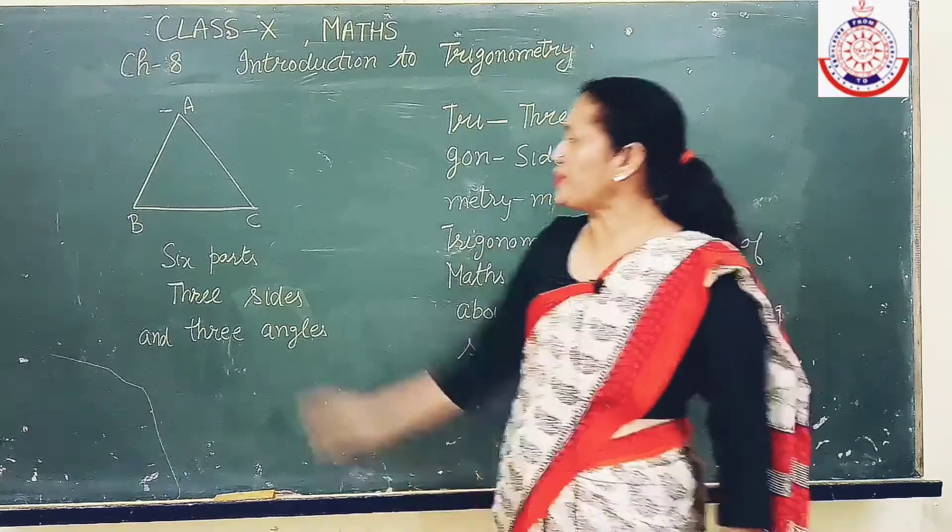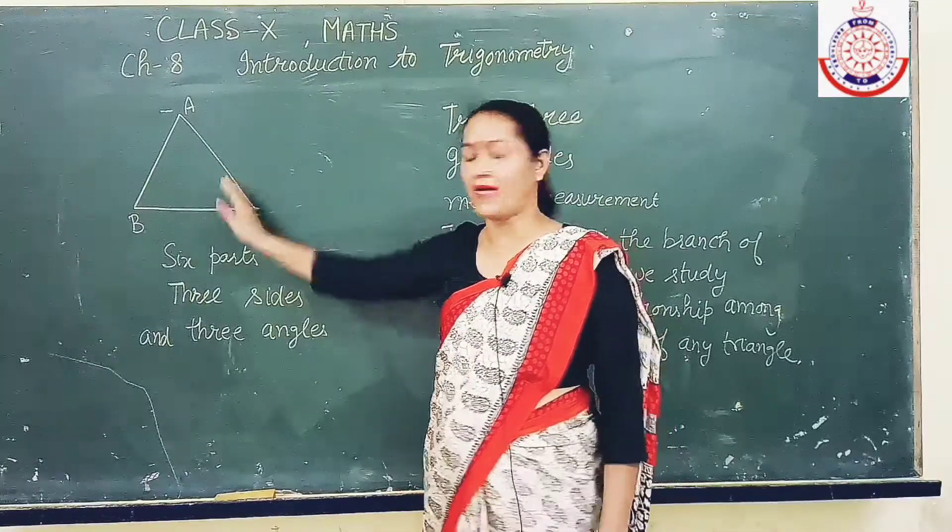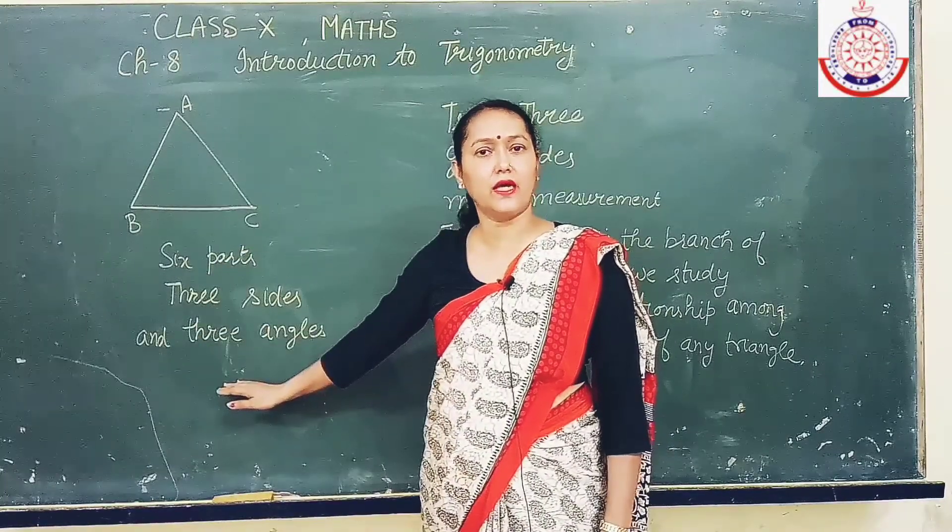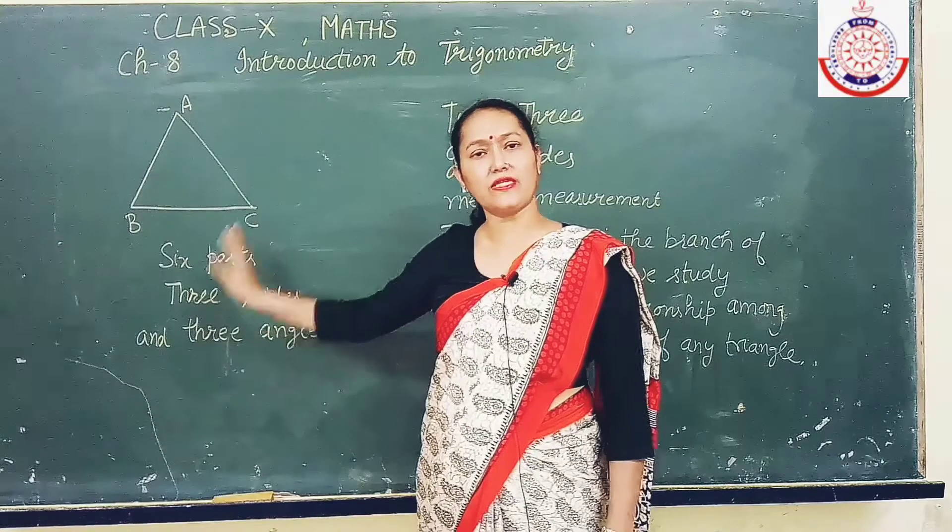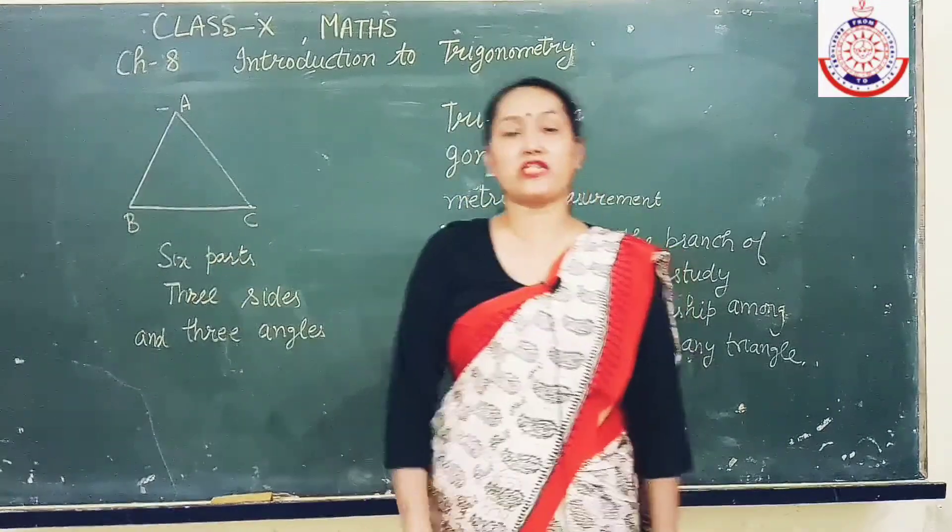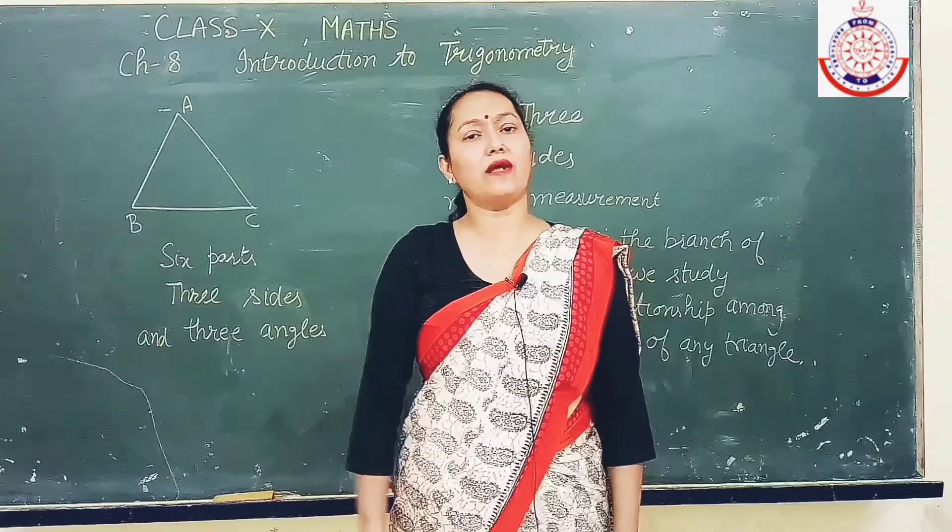Students, you all have studied that any triangle has six parts - three sides and three angles. Have you ever thought that out of these six parts if only two parts are given to us, especially one side and one angle, can you get other four parts?